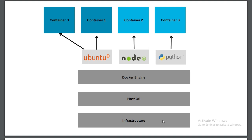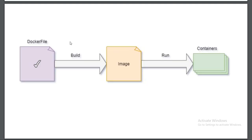You can create multiple containers from any single image. For example, Container 0 and Container 1 can both be initiated from Ubuntu, Container 2 from Node.js, and Container 3 from Python. Developers create a Dockerfile, build an image, run it, and that running image is called a container.